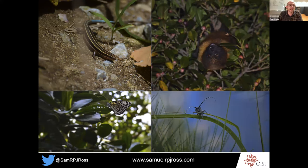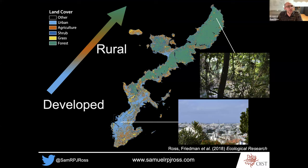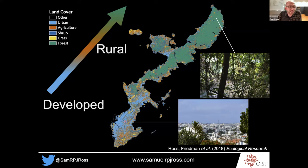But perhaps most importantly, for the kinds of questions I'm interested in, Okinawa has a really strong rural-to-urban gradient, this land use development gradient. There are about 1.4 million people living in Okinawa, mainly in the south in these urban areas. The main city down here is Naha, which has the second highest population density in all of Japan after Tokyo. So we can ask really interesting ecological questions about land use change, human activity, and how that affects biodiversity.